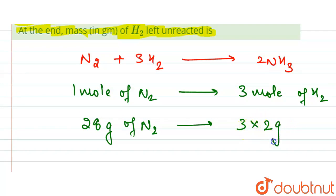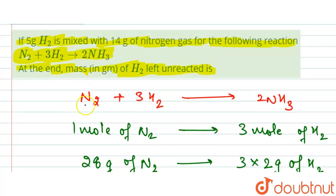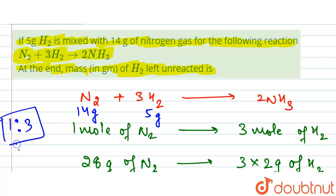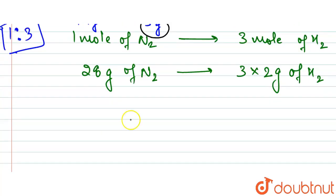We have 14 grams of N₂ and 5 grams of H₂. The stoichiometric ratio is 1:3. Based on this ratio, H₂ appears to be present in excess.